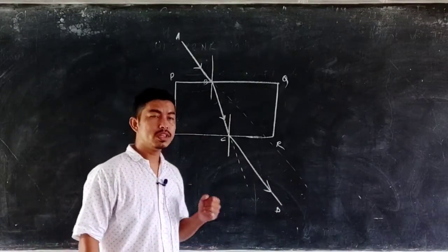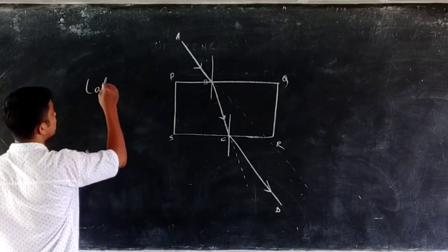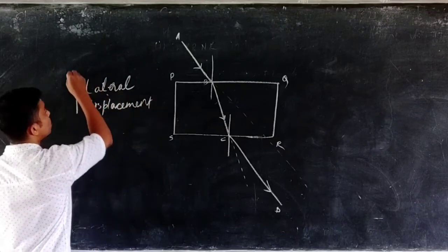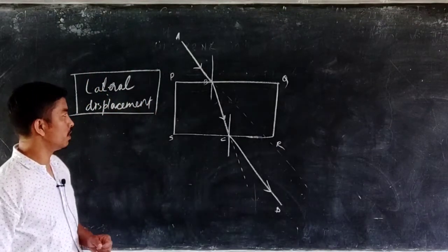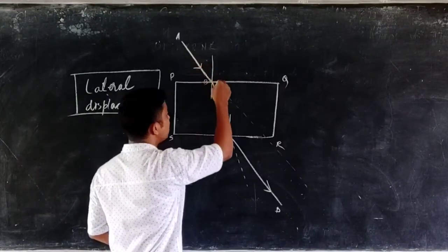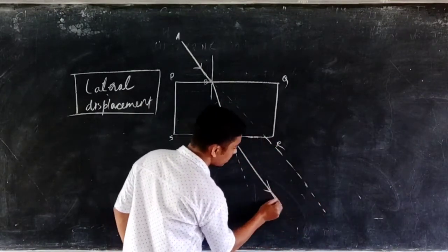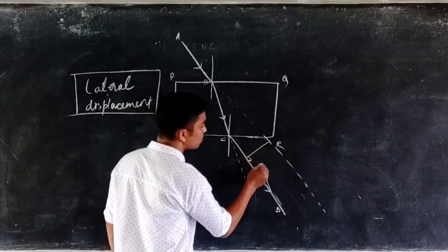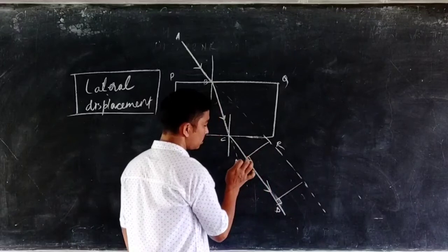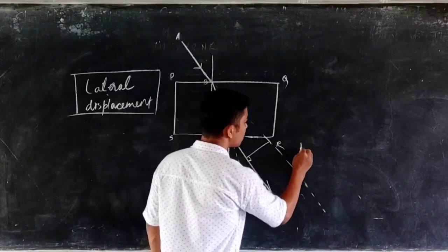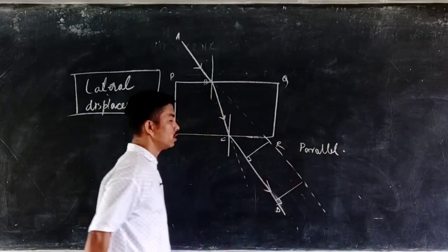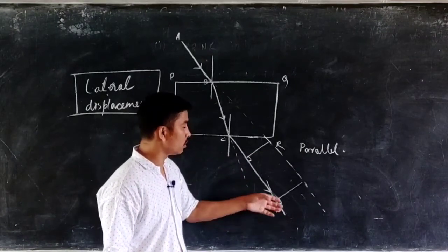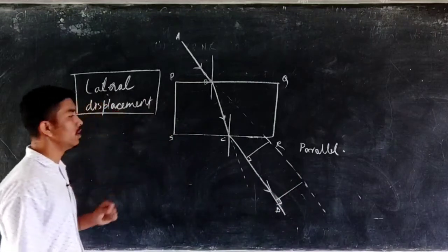In this part, one important topic is lateral displacement. When you extend the incident ray forward and compare it with the emergent ray, the perpendicular distance between these two always remains the same — meaning the emergent ray and the incident ray produced forward are parallel to one another. The distance between the emergent ray and the incident ray produced forward is known as the lateral displacement.